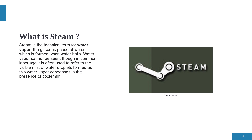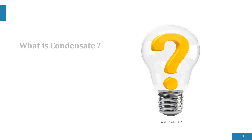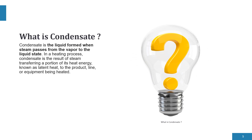Water vapor cannot be seen, though in common language it is often used to refer to the visible mist of water droplets formed as this water vapor condenses in the presence of cooler air. Condensate is the liquid formed when steam passes from the vapor to the liquid state in a heating process. Condensate is the result of steam transferring a portion of its heat energy, known as latent heat, to the product line or equipment being heated.